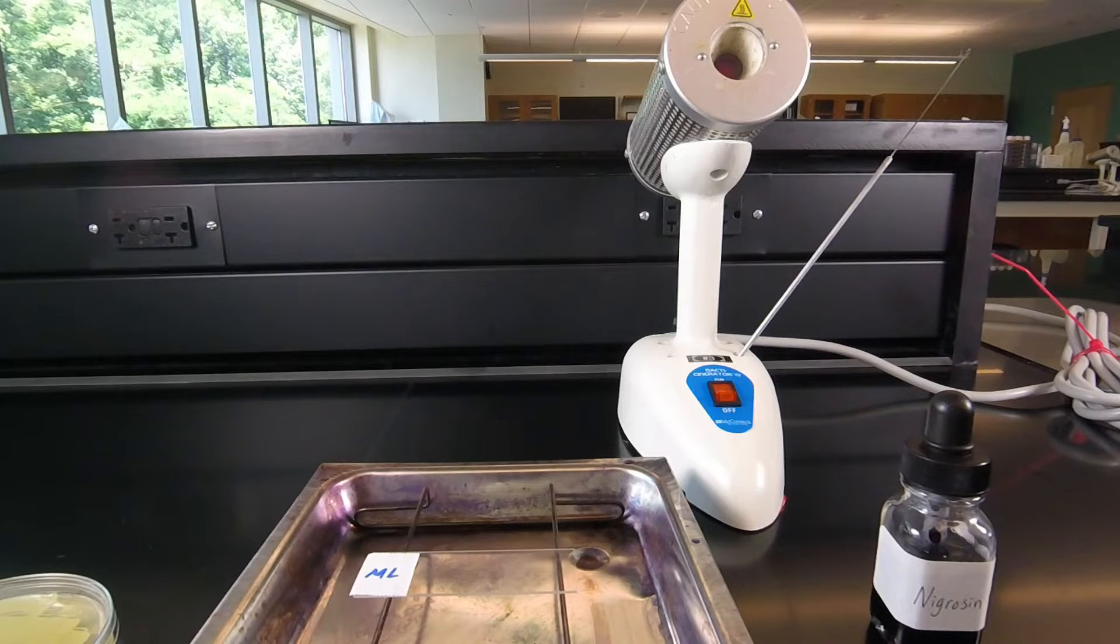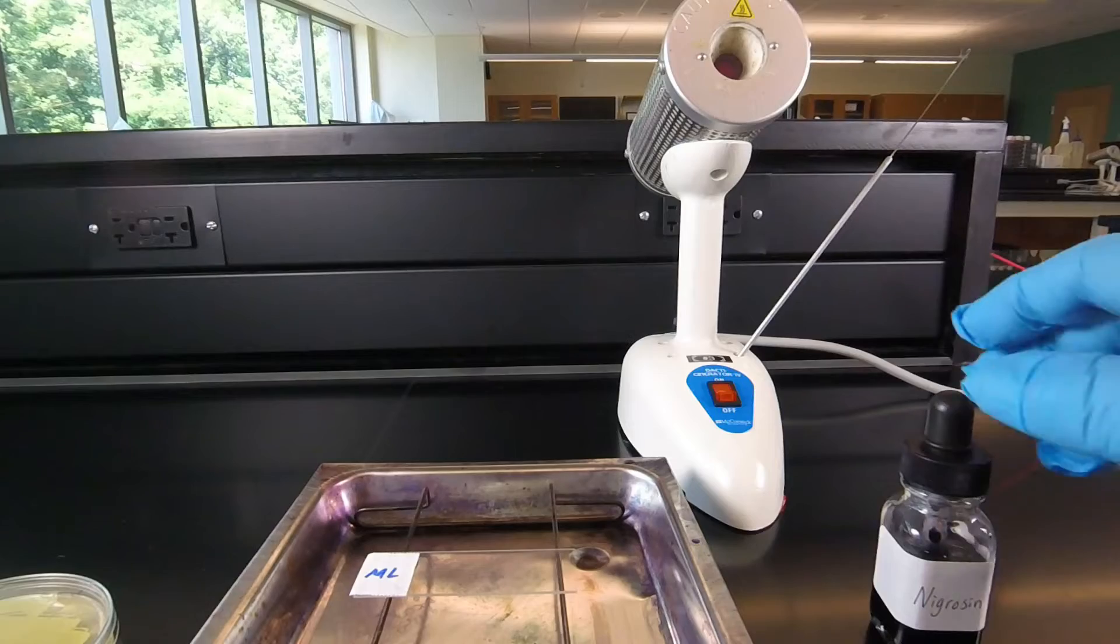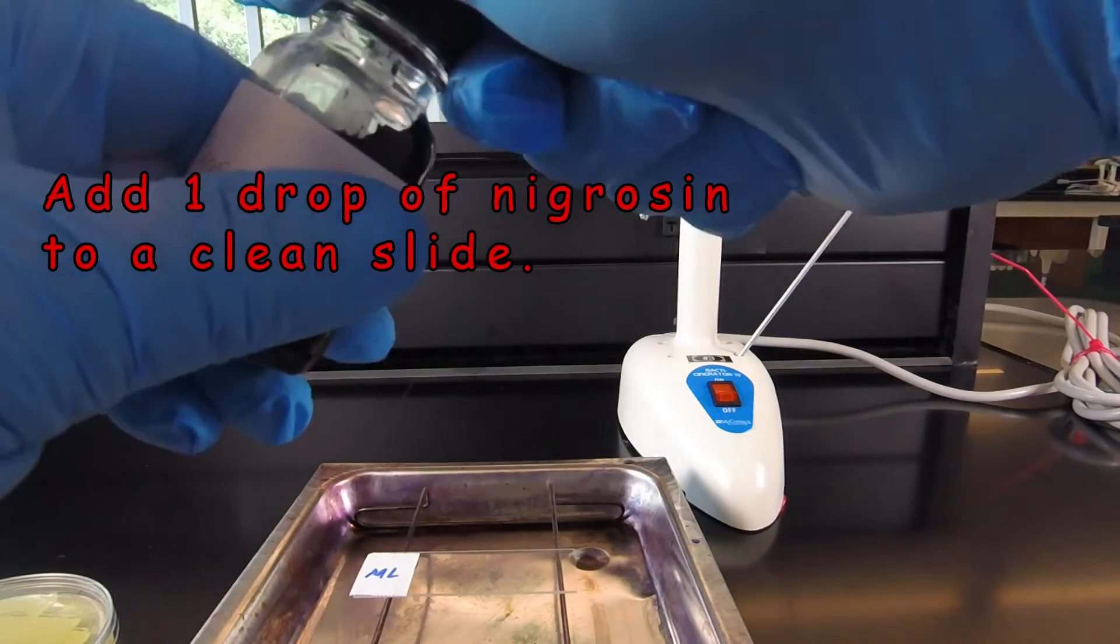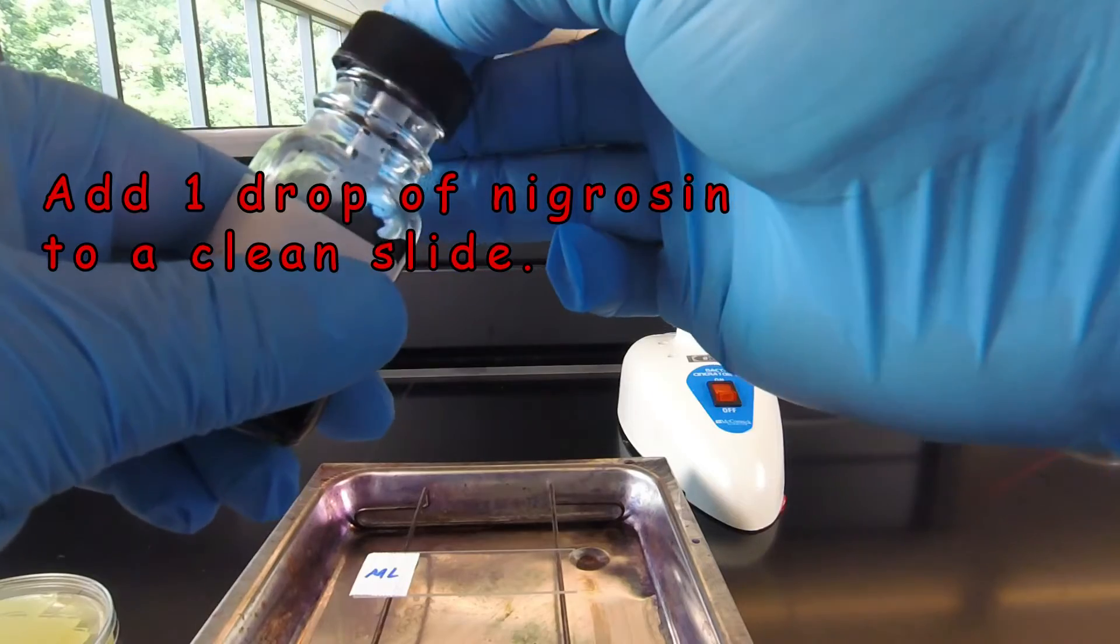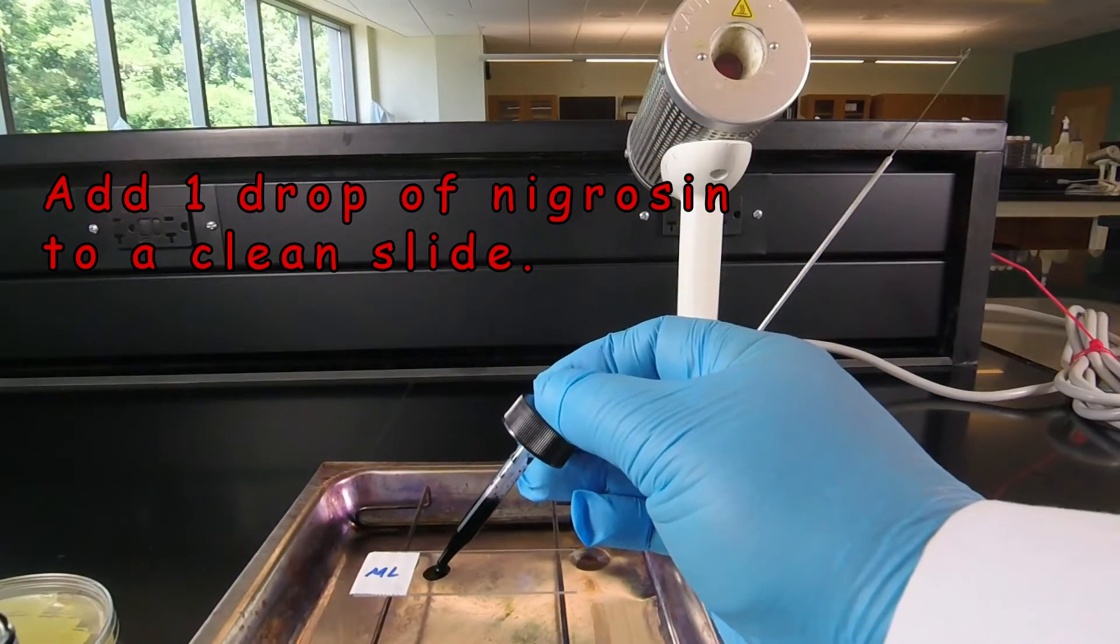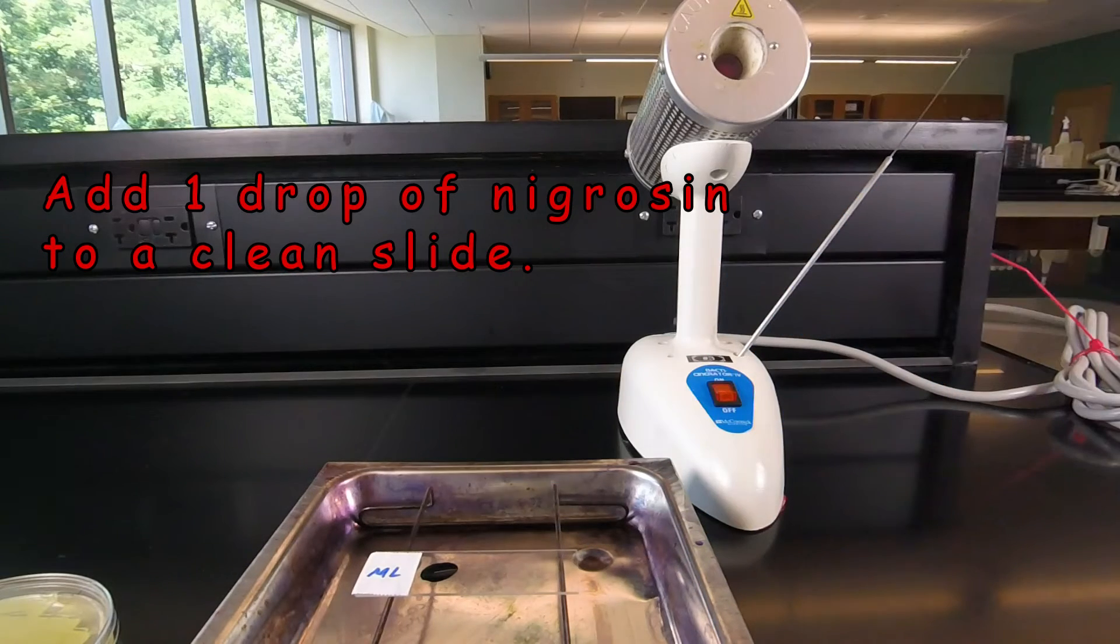So when performing an indirect stain, we start out by adding a drop of our acidic dye Nigrosin to the slide instead of water. We add a nice little drop full up near the top of the slide.